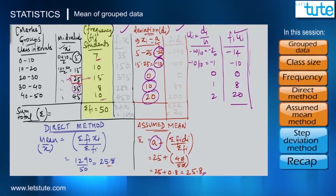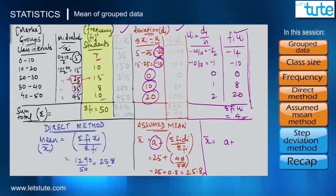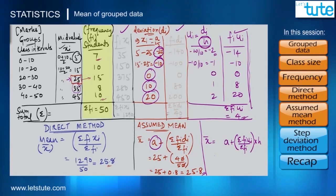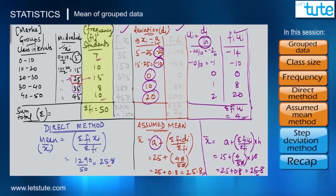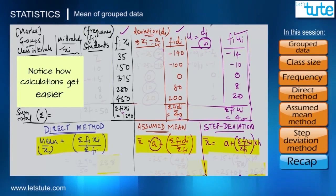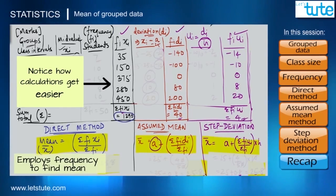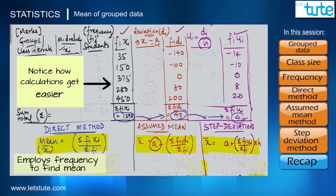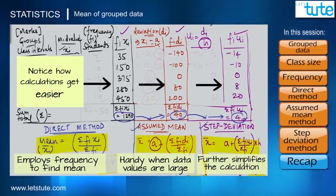To find the mean using this method, we add the assumed mean, then add (Σfi·ui ÷ Σfi) multiplied by h. Since we subtracted a factor of 25 and divided by h, we add back both at the end: 25 + (4 ÷ 50) × 10 = 25.8. This is called the step deviation method. Notice that Σfi·xi was 1290 with the direct method, Σfi·di was 40 with assumed mean, and Σfi·ui is just 4 with step deviation — calculations become progressively easier, especially when data values are large.